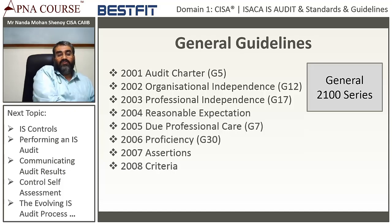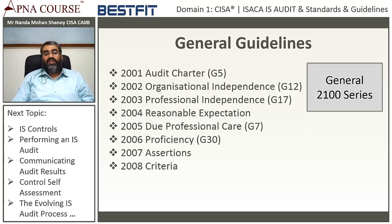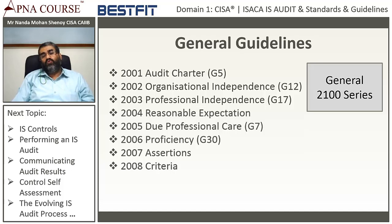Items shown in red on the chart are still in development. You will also see old guideline numbers in brackets — G5, G12, G17, G7, and G13 — which pertain to the old guideline numbers that have been renumbered to align with the new series. For example: G5 became 2001, G12 became 2002, G17 became 2003, G7 became 2005, and G30 became 2006. None of the standards have changed in substance — they have only been renumbered.